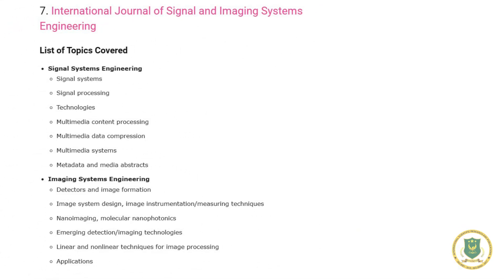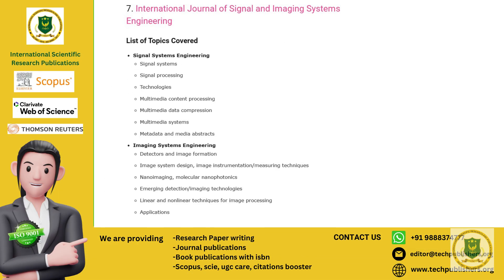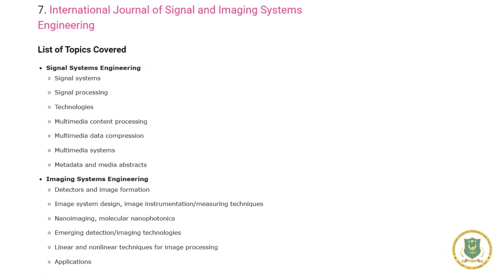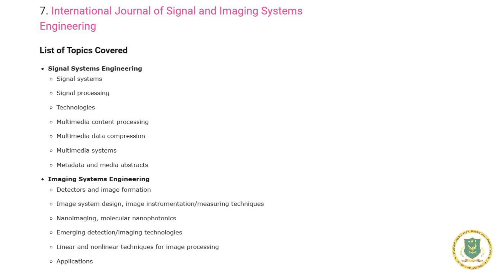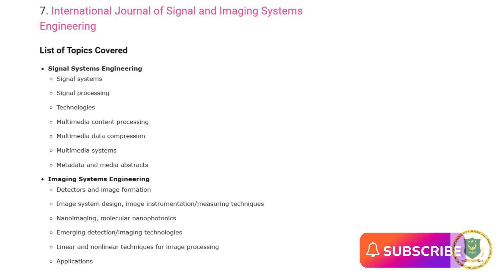Number seven: International Journal of Signal and Imaging Systems Engineering. This journal covers topics in two parts. Part one — Signal Systems Engineering — includes signal systems, signal processing technologies, multimedia content processing, multimedia data compression, multimedia systems, and metadata and media stacks. Part two — Imaging Systems Engineering — includes detectors and image formation, image system design, image instrumentation and measuring techniques, nano imaging and molecular nanophotonics, emerging detection or imaging technologies, and linear and non-linear techniques for image processing applications.